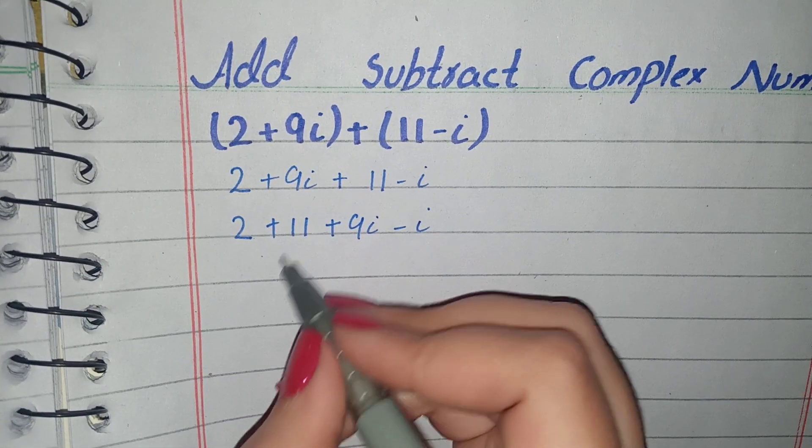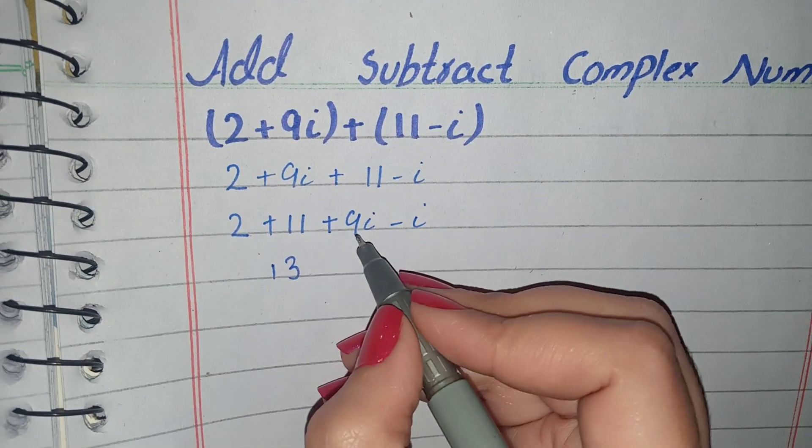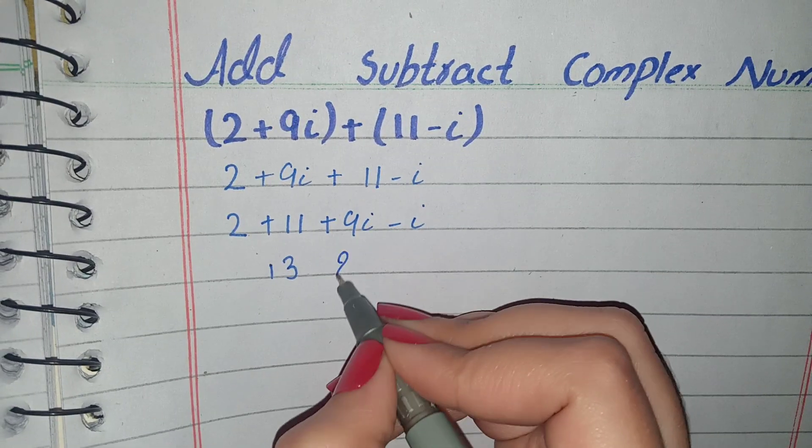We will add them: 2 plus 11 equals 13, and 9i minus i equals 8i.